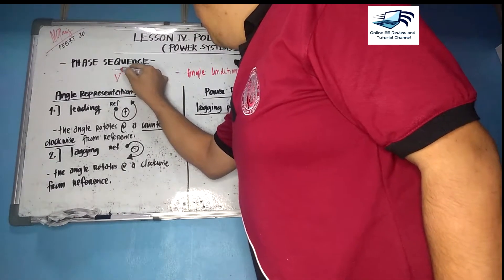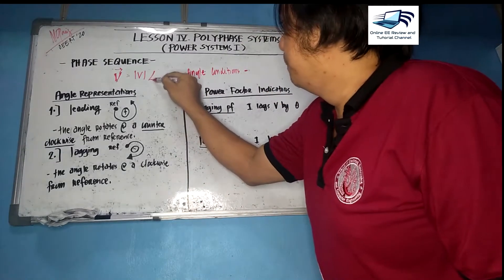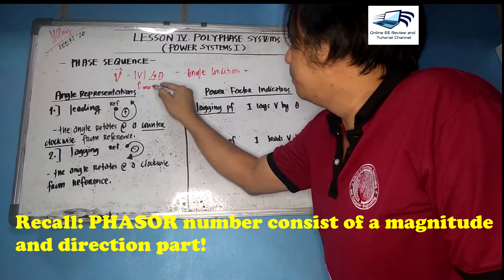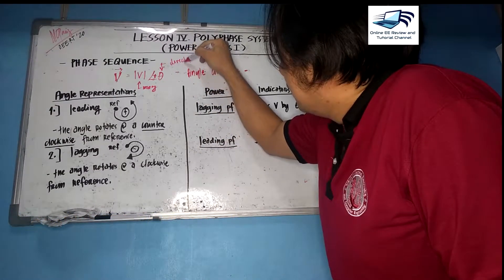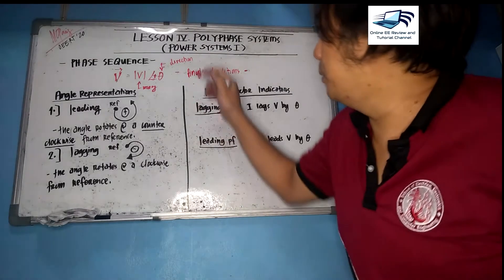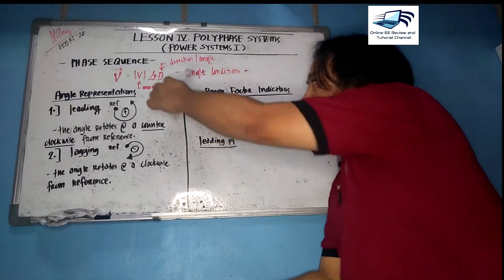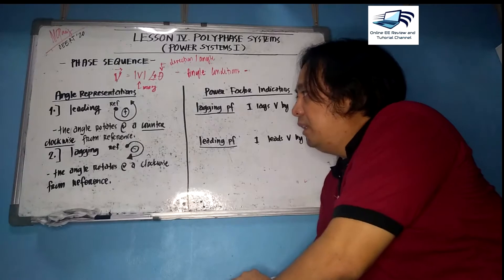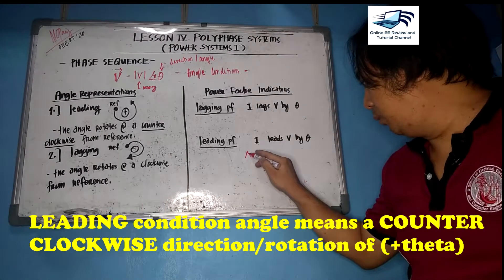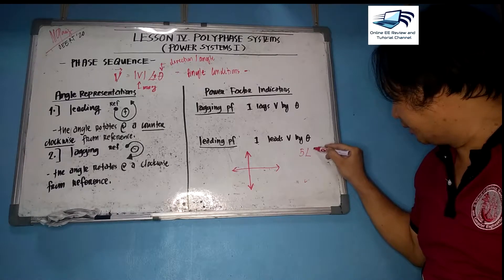We already know what a phasor is — a phasor is a complex number represented in polar form, having a magnitude and a direction part. So V-bar angle means the magnitude and the direction part, which can be plus or minus. Now, how can we determine if the direction is leading or lagging? On angle representation, direction or angle is the same as displacement. A leading condition means the angle rotates counter-clockwise from a respective reference, so for example five-bar-30.